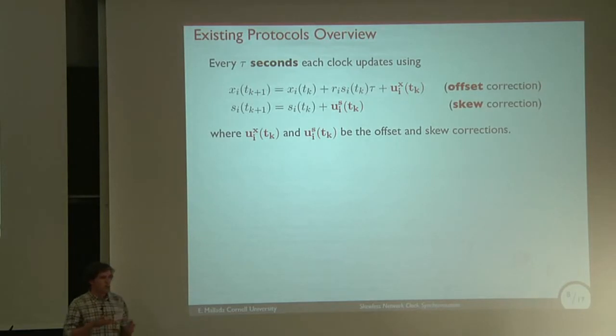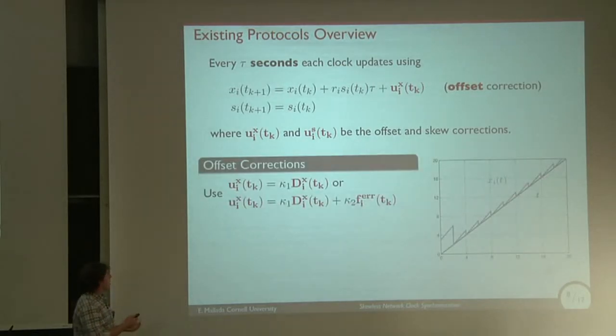To go more precisely on how these different protocols work, I'm going to use this simple system. We have every τ seconds, we assume that the computer corrects the clocks. We can represent the time, the estimated time at tₖ₊₁ to be equal to the time at tₖ, so one period before, plus the estimated time that has elapsed and possible two types of corrections. One is offset correction, which goes directly to a correction in the time value, and also a skew correction, which is a correction on this frequency.